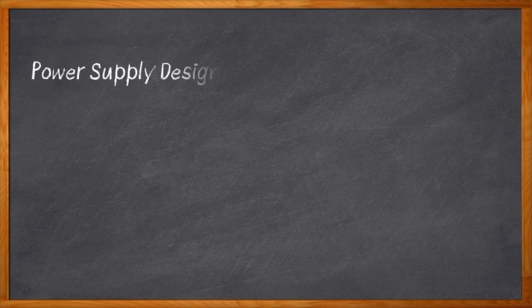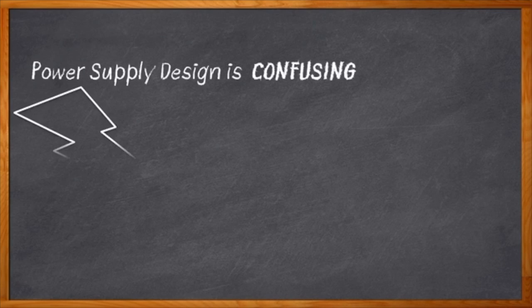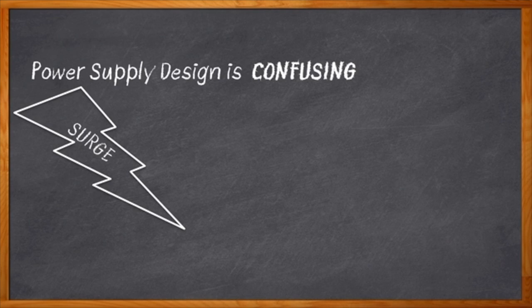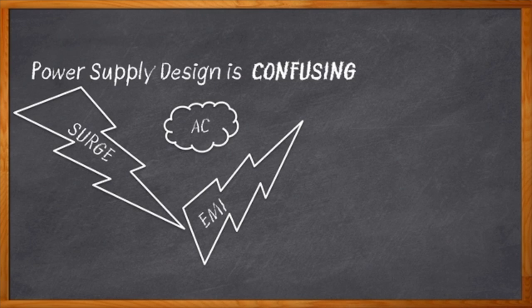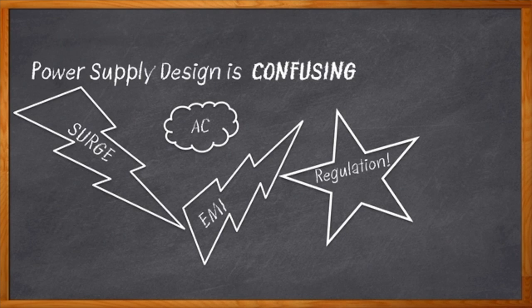Power supply design can be some pretty confusing business. You've got surge protection to make sure no bad stuff gets in, EMI protection to make sure no bad stuff gets out, transformers and rectifiers to tame all that crazy AC stuff — to iron out all the wrinkles — and finally, regulation to get the DC you actually wanted in the first place.